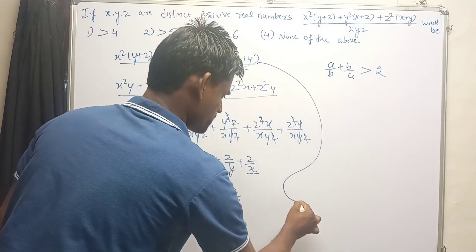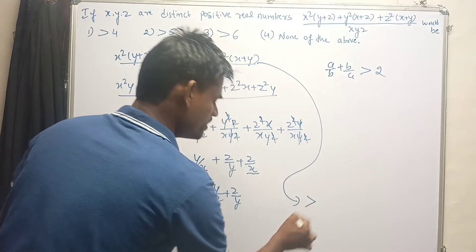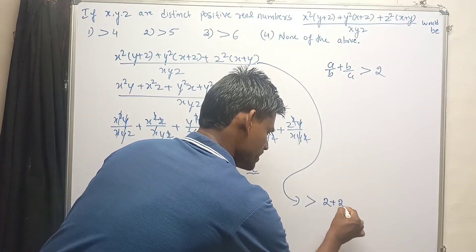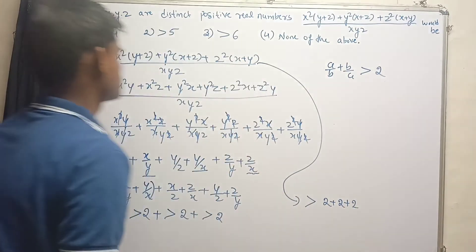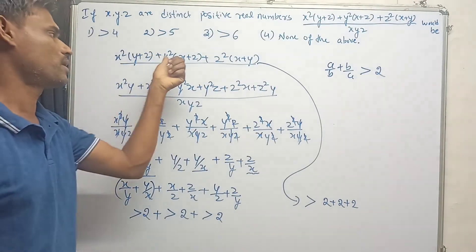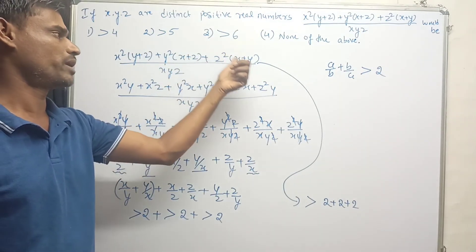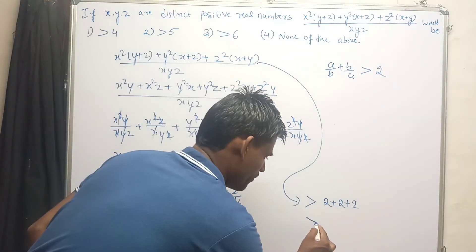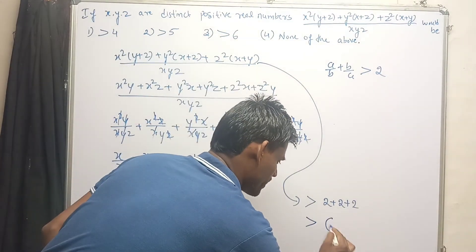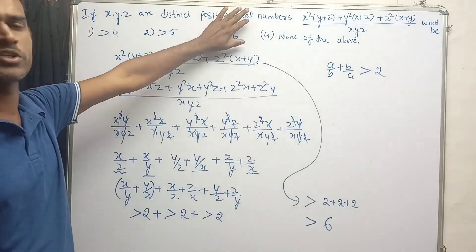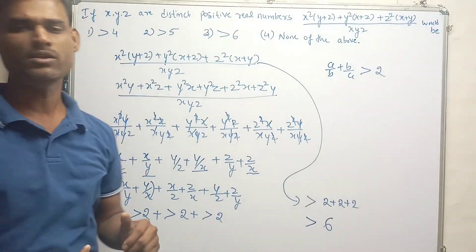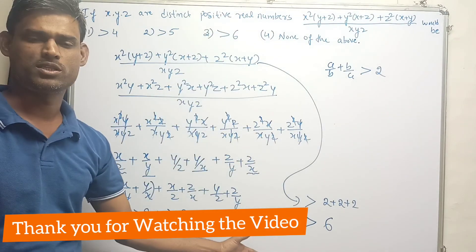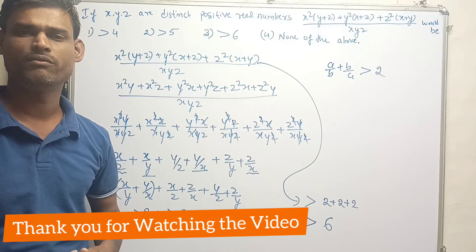On that basis, x over y plus y over x is greater than 2, plus x over z plus z over x is also greater than 2, and similarly y over z plus z over y is also greater than 2. So this entire expression is always greater than 2 plus 2 plus 2, that is greater than 6. Therefore option 3 is the correct one. I hope you got this solution. Thank you for watching the video.